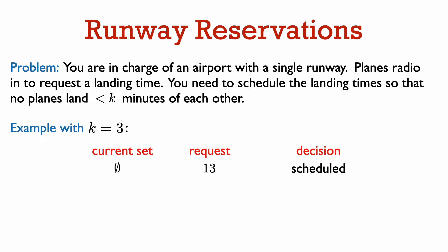Now say a request comes in to land at time 13. This has no conflict, so we schedule it and add 13 to our set of landing times. The next request asks to land at time 7. This is 6 minutes away from time 13, the only other landing time in our set, so there is no conflict, and we schedule it.